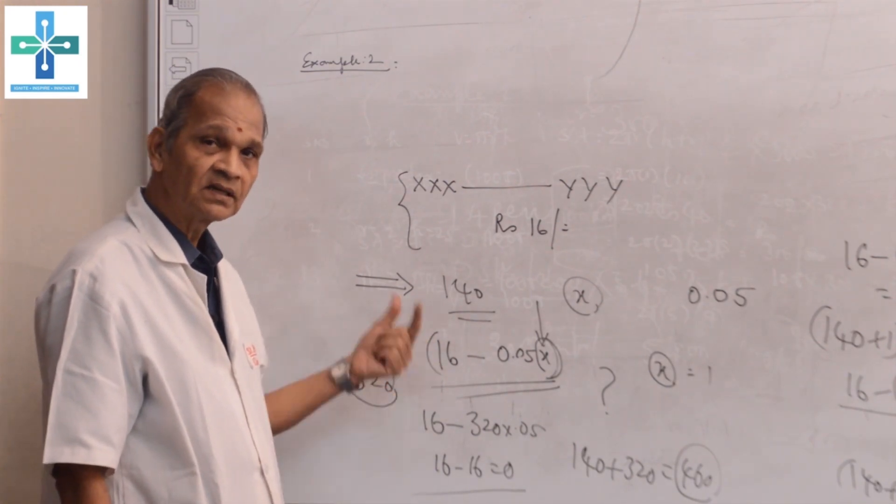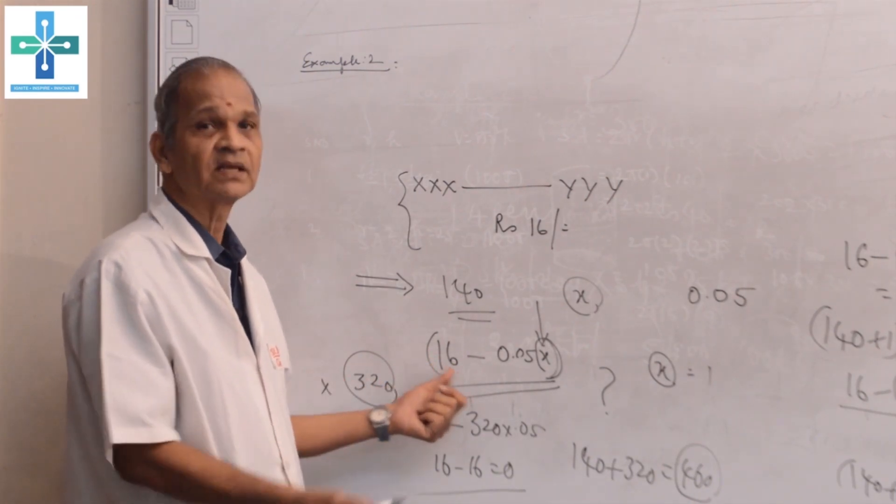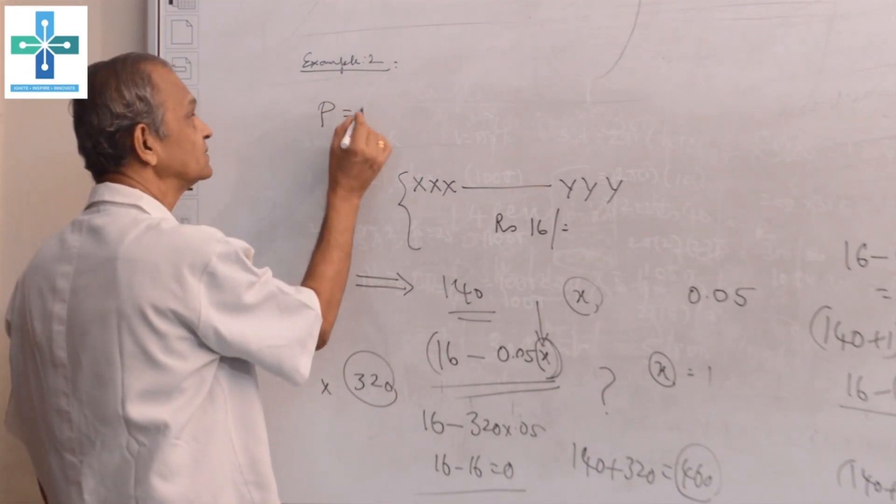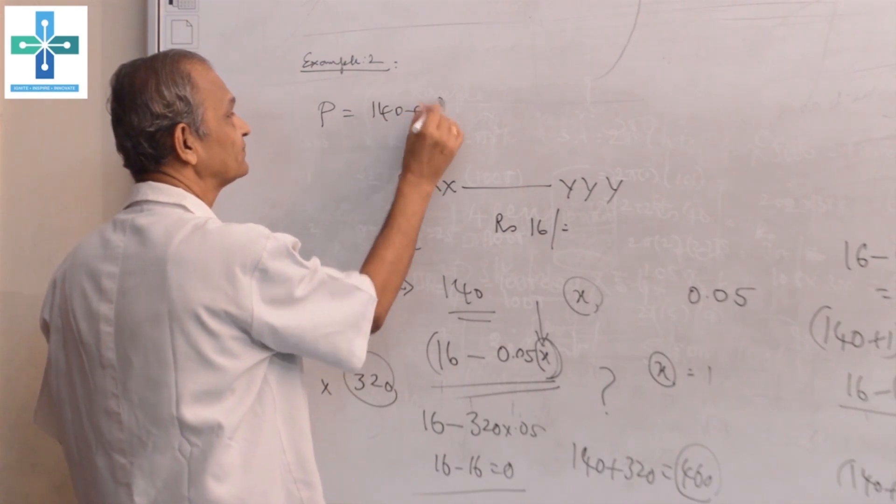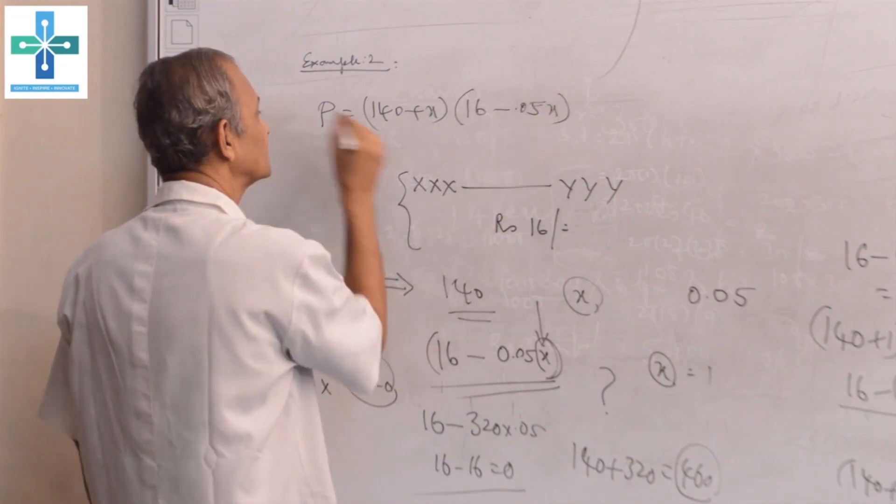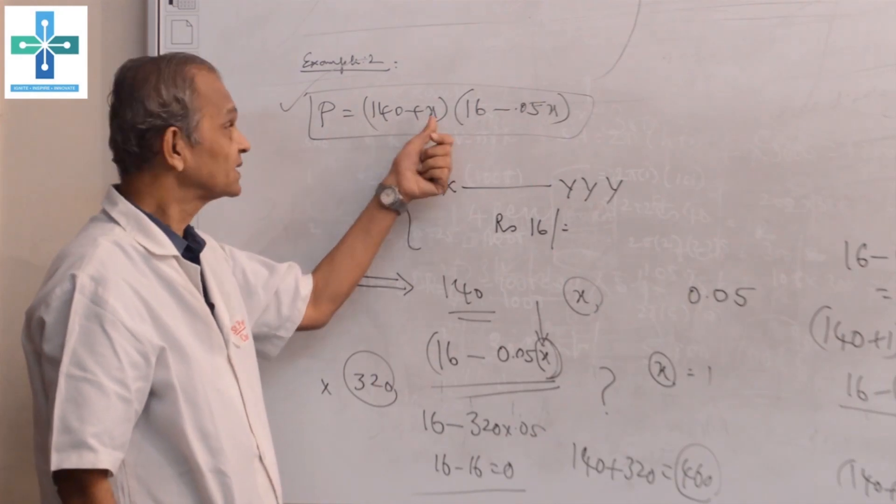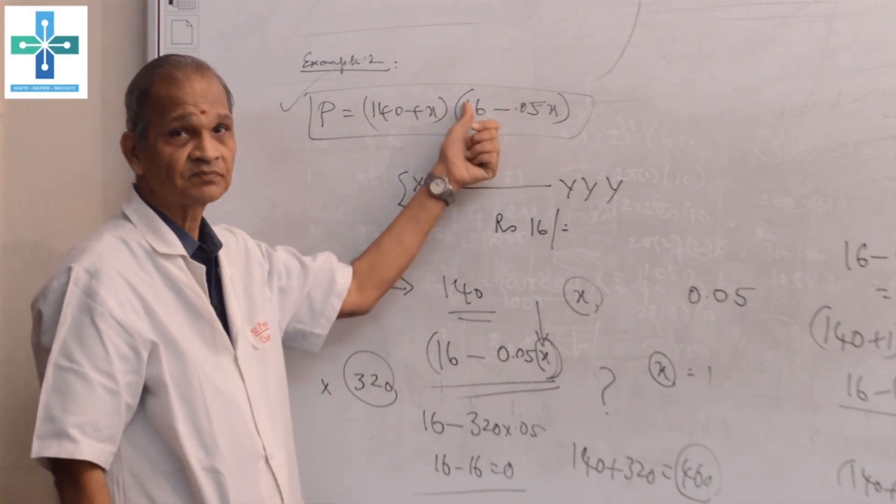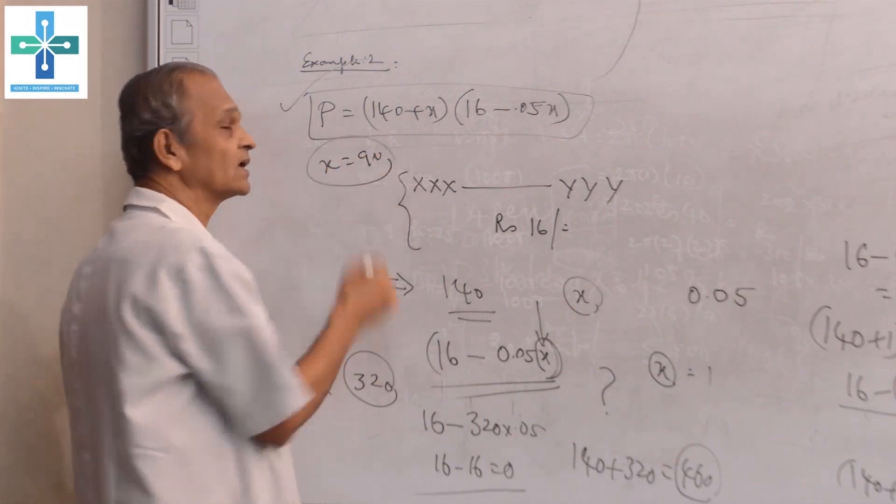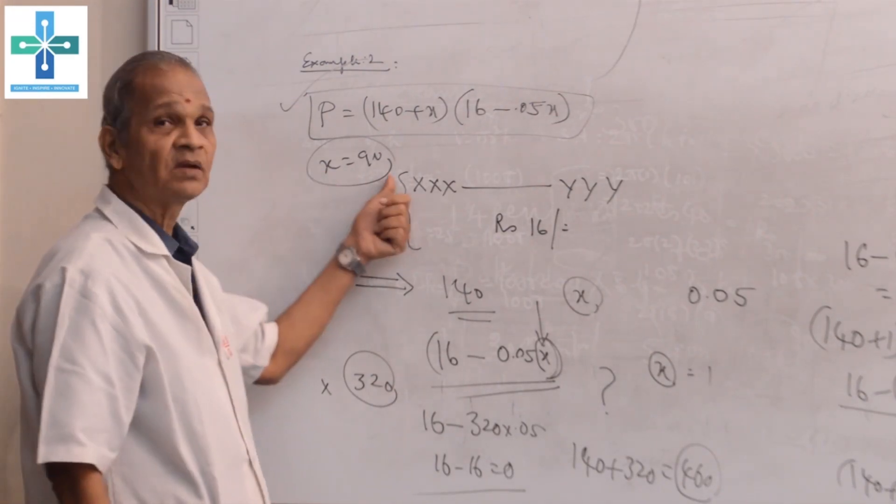This can be calculated only with the help of calculus, maximum minima. For that, we have to frame profit P = (140 + X) into (16 - 0.05 times X). If you take this equation, P is, for this X accordingly, the cost. Then we can identify X value as 90. We will discuss that in later applications. Our X will be 90.